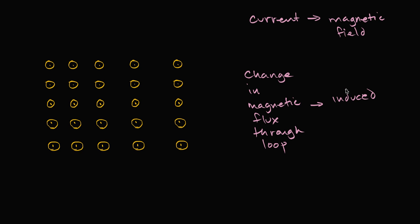It induces a current — an induced current. So this right over here is my attempt at drawing a magnetic field, and these are the magnetic field lines. They don't look like lines because they're all popping out of the screen, moving towards you, towards the viewer.